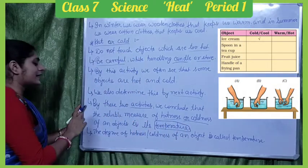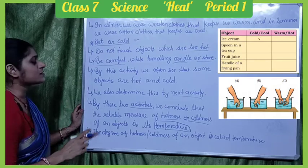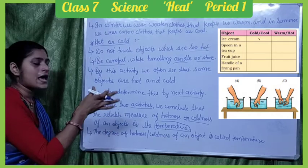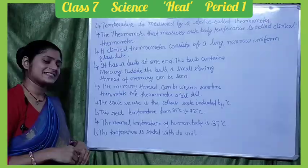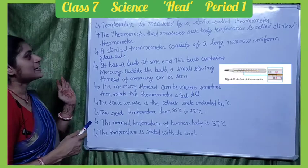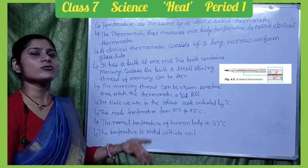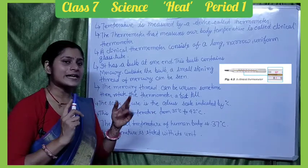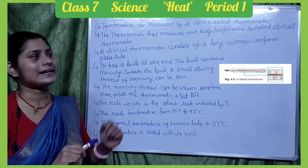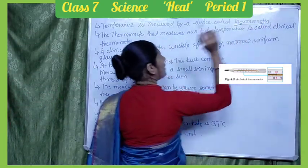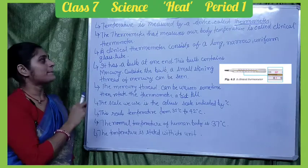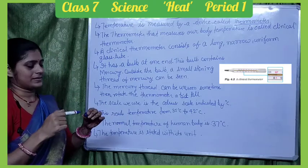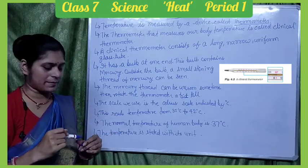The degree of hotness or coldness of an object is called temperature. Temperature is measured by a device. There are two types of thermometers: one that measures body temperature, and another for other objects.